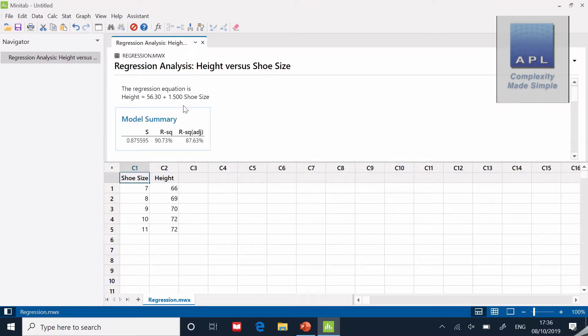Let's see what I get. You can see it immediately gives me some information—gives me the equation: height equals 56.3 plus 1.5 times shoe size. It tells me the R squared is 90.73, which is excellent.